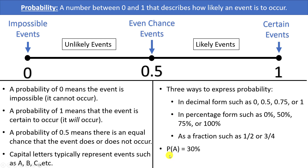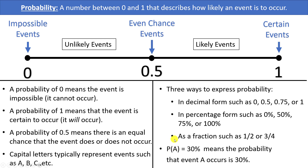This is what we call a probability statement. We use capital letters to represent events, and you would read P(A) = 30% as 'the probability that A occurs is 30%.' Note that P is not a variable being multiplied — it denotes 'the probability of the event A occurring,' which is 30%.